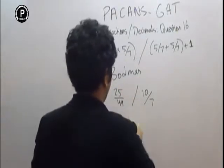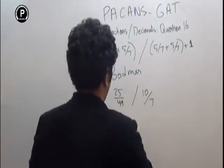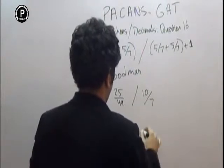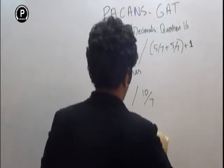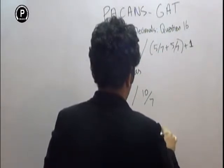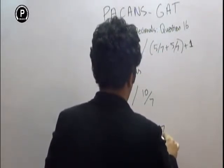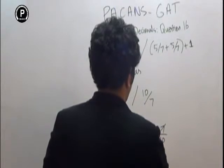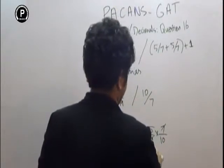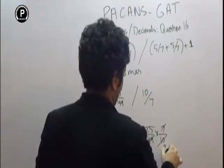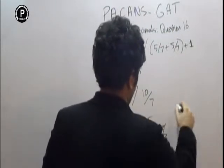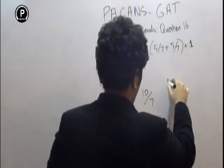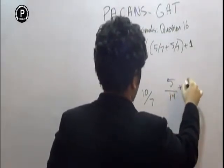So the first process is going to be 25 over 49 divided by 10 over 7, which is going to be 25 over 49 times 7 over 10. You are going to cancel: 7, 5, 2 — and this is going to remain, which is going to be 5 over 14 plus 1.